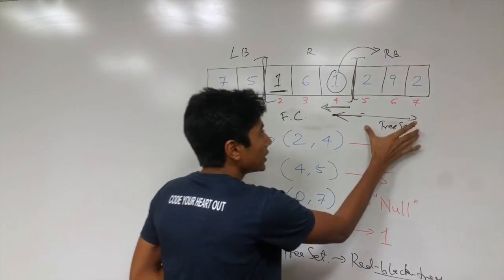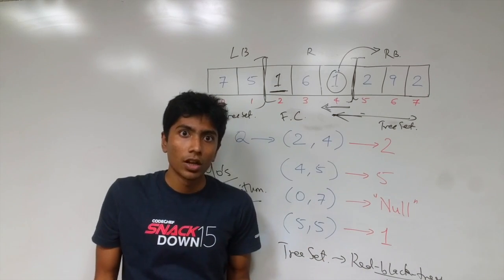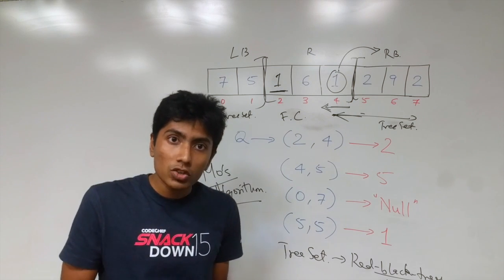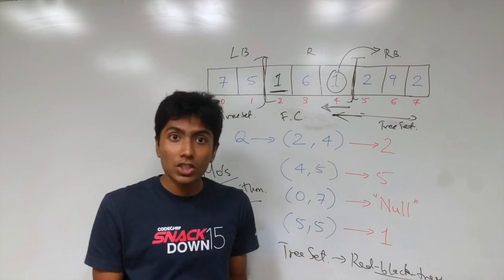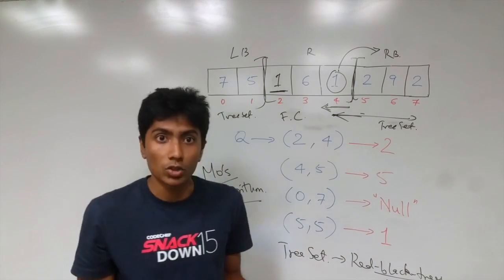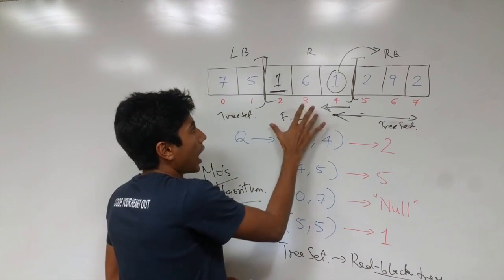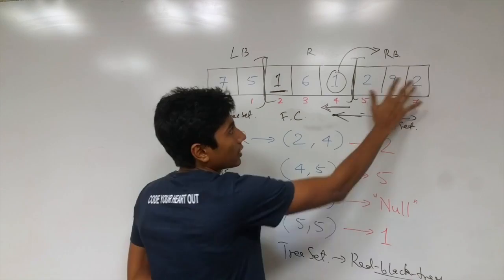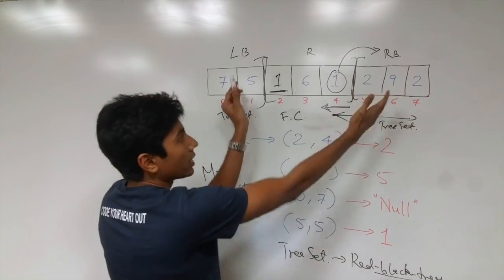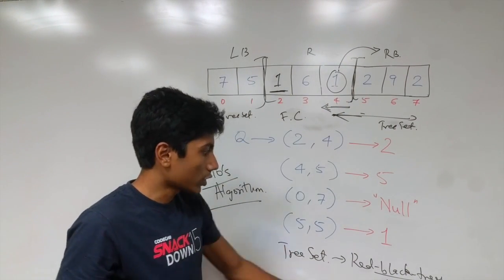On the other hand, here we cannot have a frequency counter because that's not going to be efficient. When you want the minimum, you want a data structure which gives you fast querying, fast querying for the minimum in the set that we are looking at. So therefore we need the tree set and we do not need how many elements do we have outside the range. We just needed how many elements do we have inside the range.